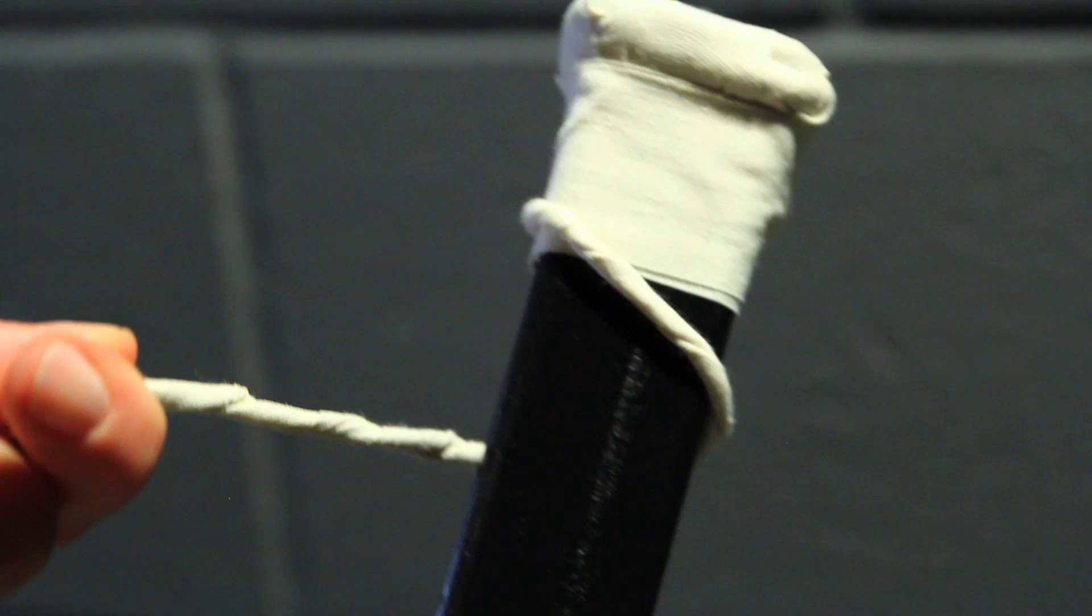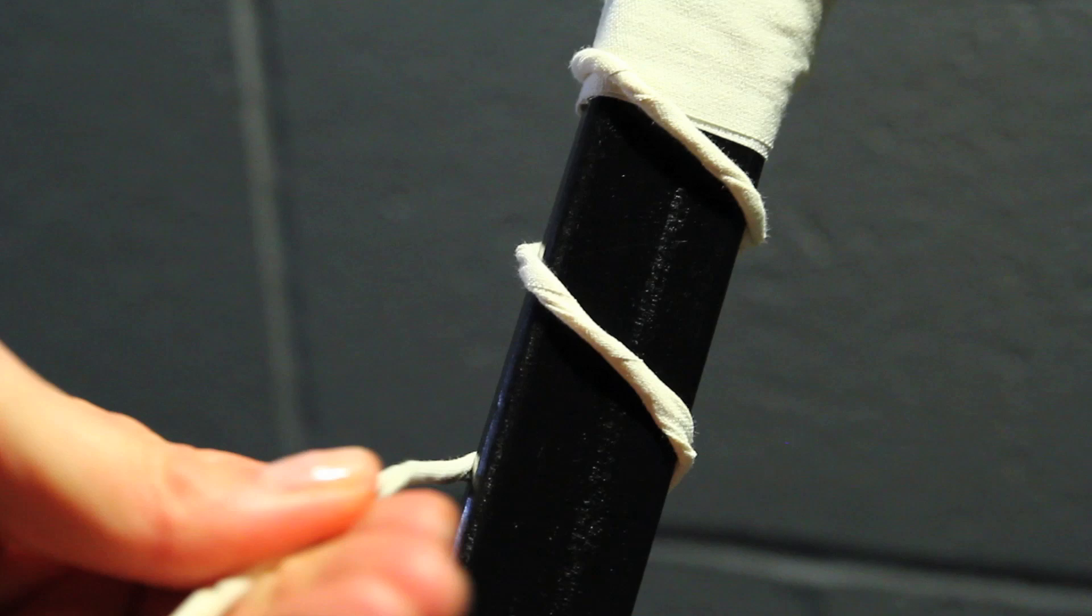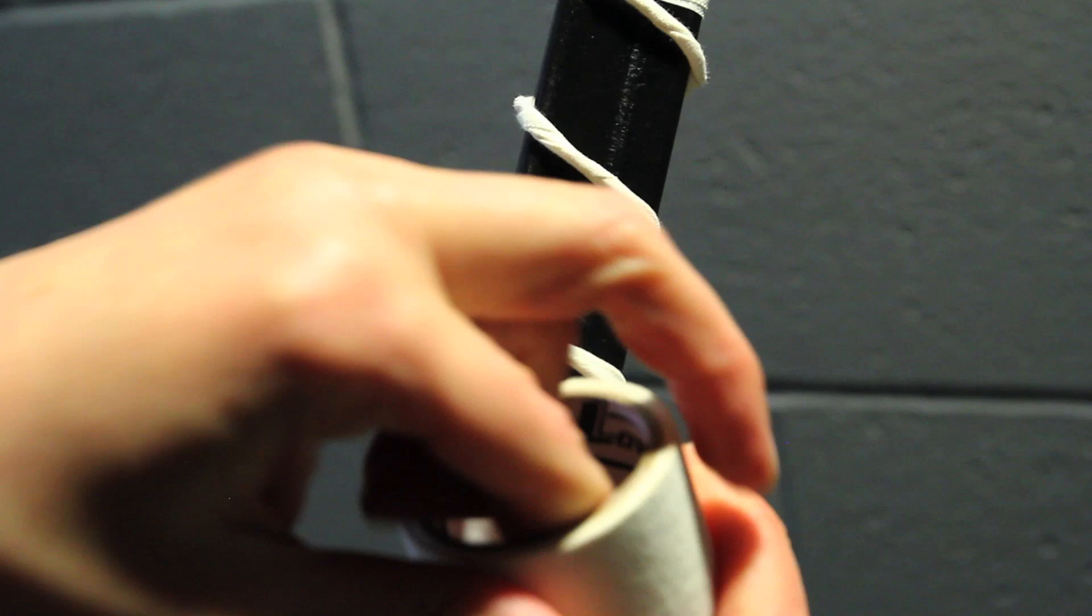Now we're going to make our grip. We're going to keep it on at a slight angle and just start wrapping it around the stick. How long you make your grip and how wide apart your grip is really depends on the size of the hand that's going to be utilizing it. So I'm going to do three, and then on my last one, I'm going to bring it straight across.